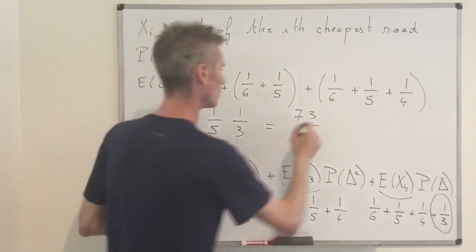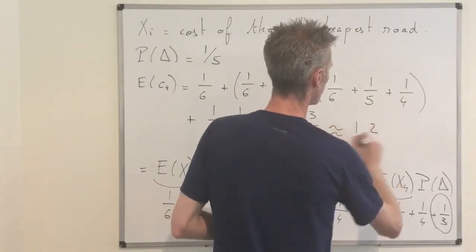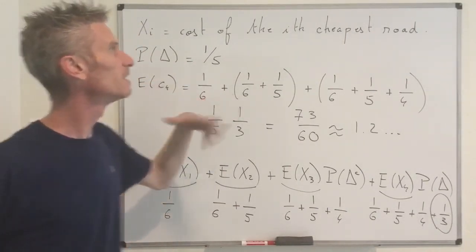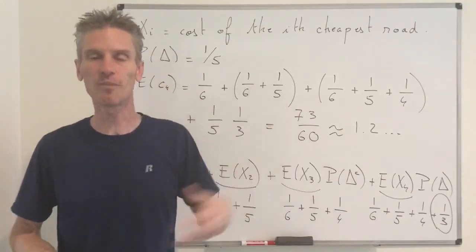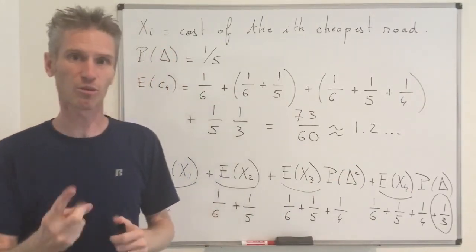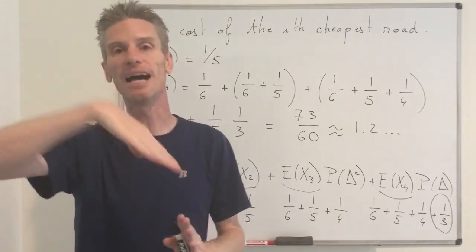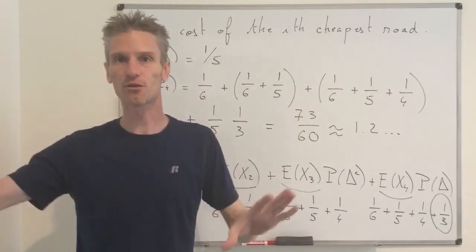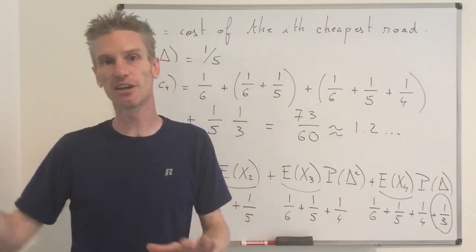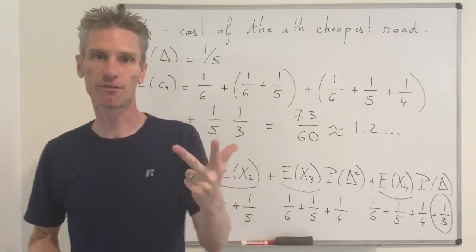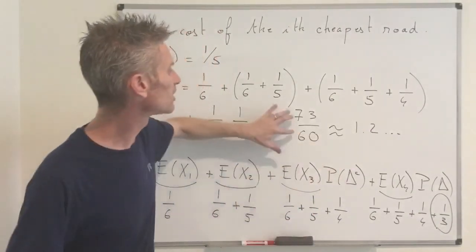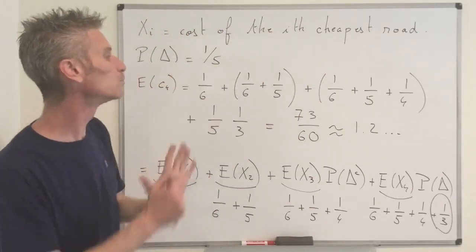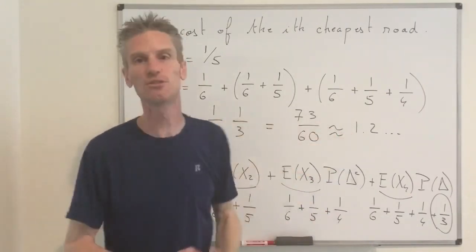So E[C4] = 73/60, which is approximately 1.2. If you were to just build three roads at random, hoping to connect all four cities, the cost would be 3. Even if you build the three cheapest roads and avoid the triangle issue, the optimal minimum spanning tree has an average cost of just slightly above 1. So building the cheapest connected roads indeed saves a lot of money.